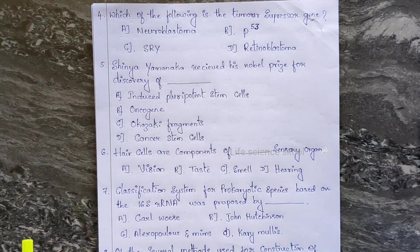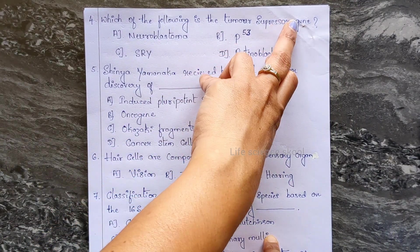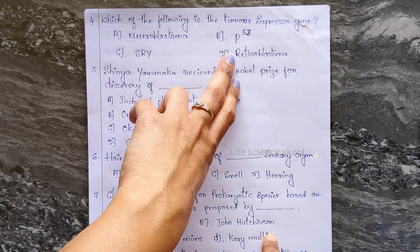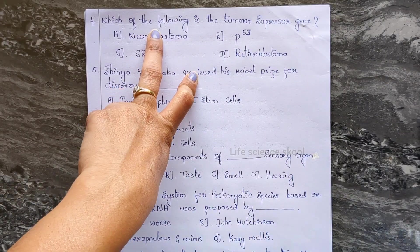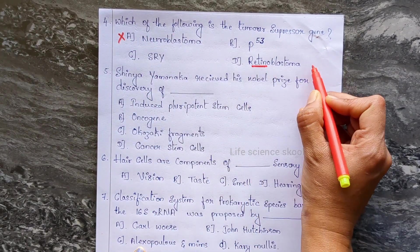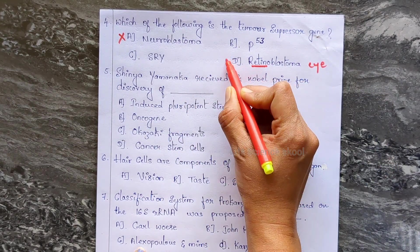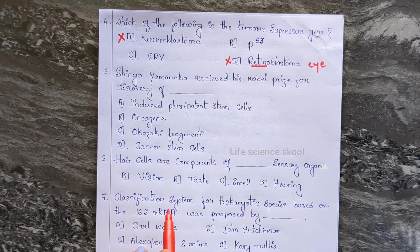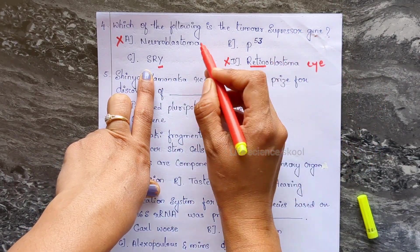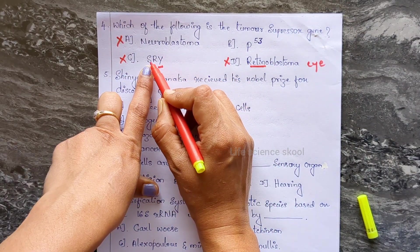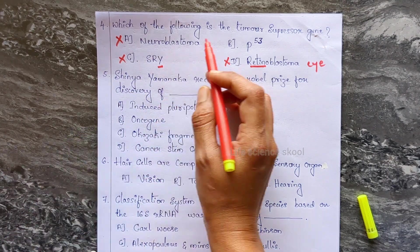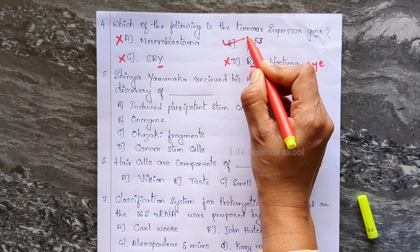Moving on to the 4th question: which of the following is the tumor suppressor gene? Option A is neuroblastoma — that is a cancer of the nerve cell, not a tumor suppressor gene. Option C is SRY — that stands for sex-determining region of Y, which is related to sex determination, not tumor suppression. Option D is retinoblastoma — that is a cancer of the retina. So the correct answer is option B: P53 is the tumor suppressor gene.